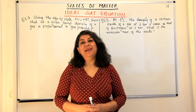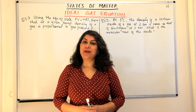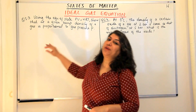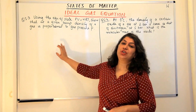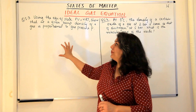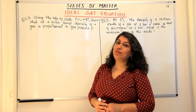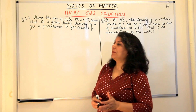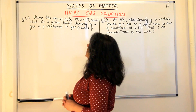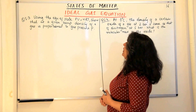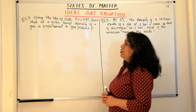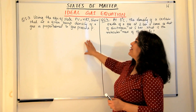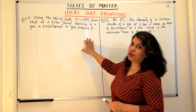Hello, I'm Seema and welcome to part 16 of the chapter States of Matter. Let us now start solving some problems based on the ideal gas equation which are given in your NCERT textbook exercise. This is question 5.3 from your NCERT textbook exercise from the class 11 chemistry textbook. The question is: using the equation of state PV = nRT, show that at a given temperature the density of a gas is proportional to gas pressure P.